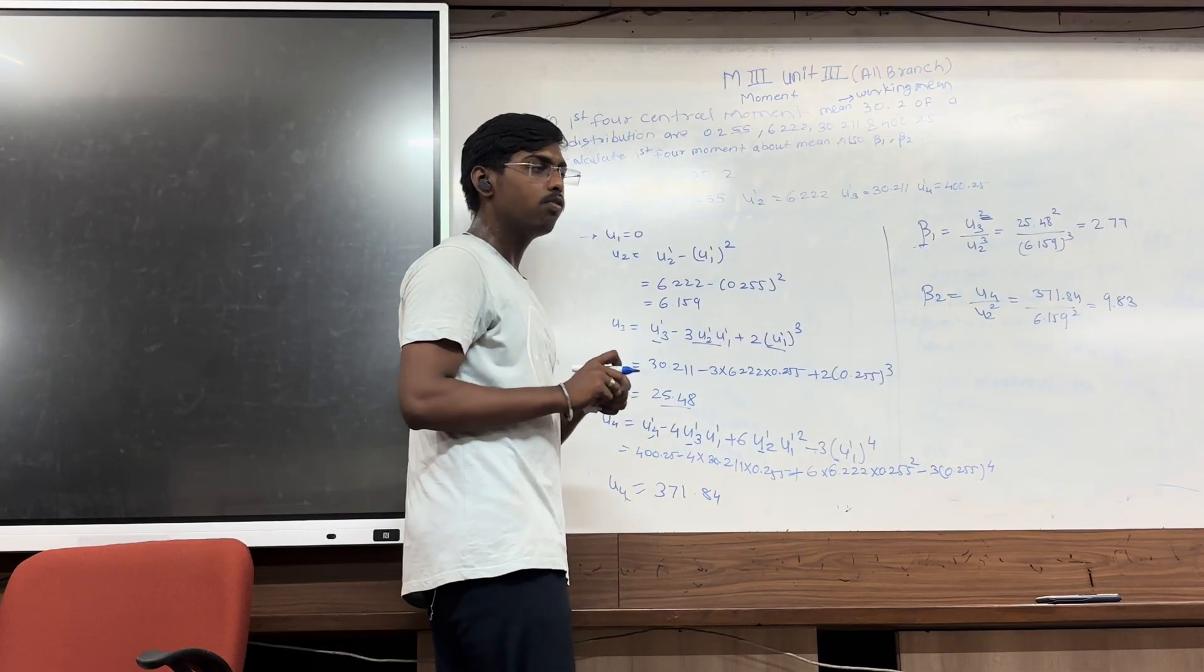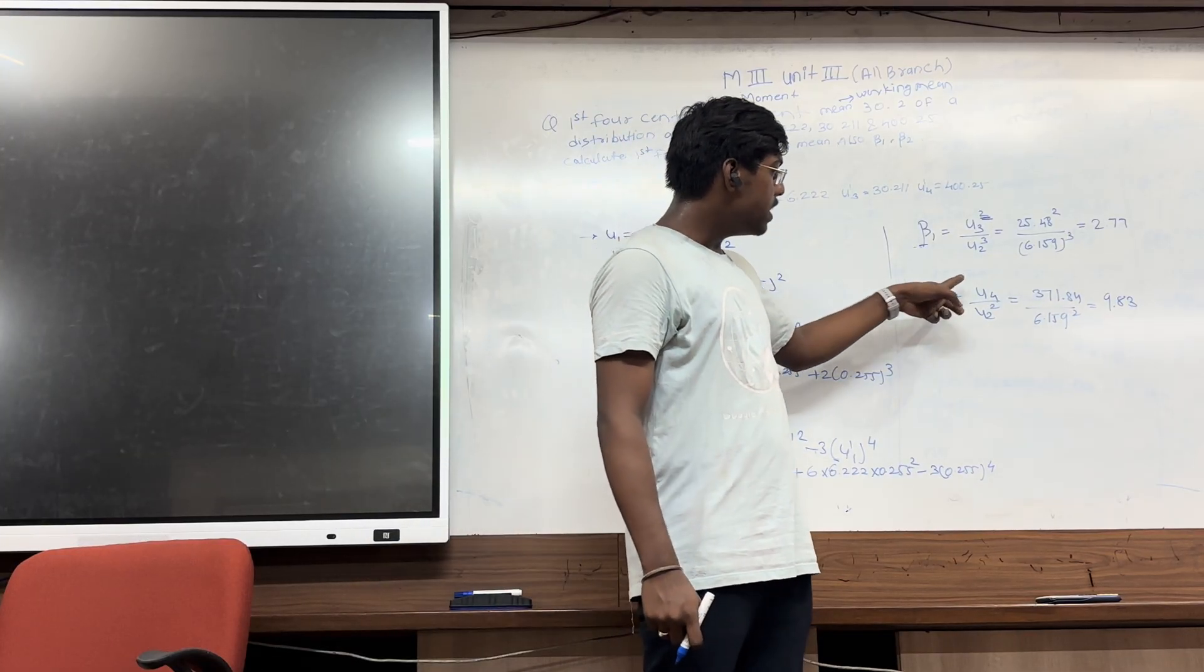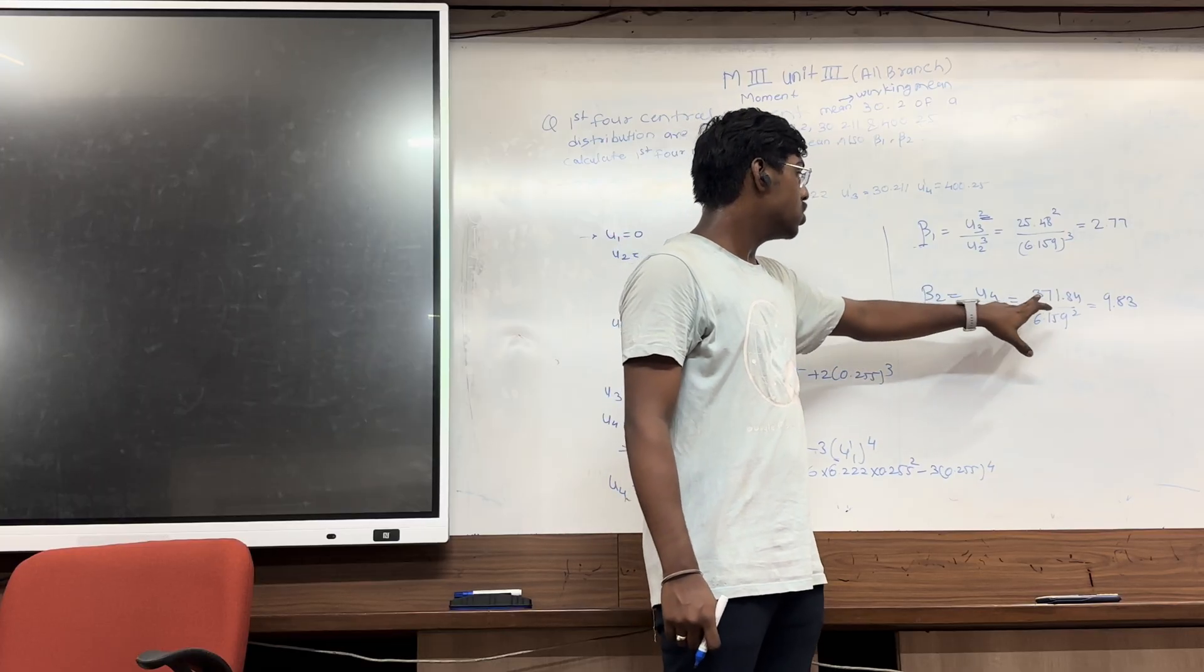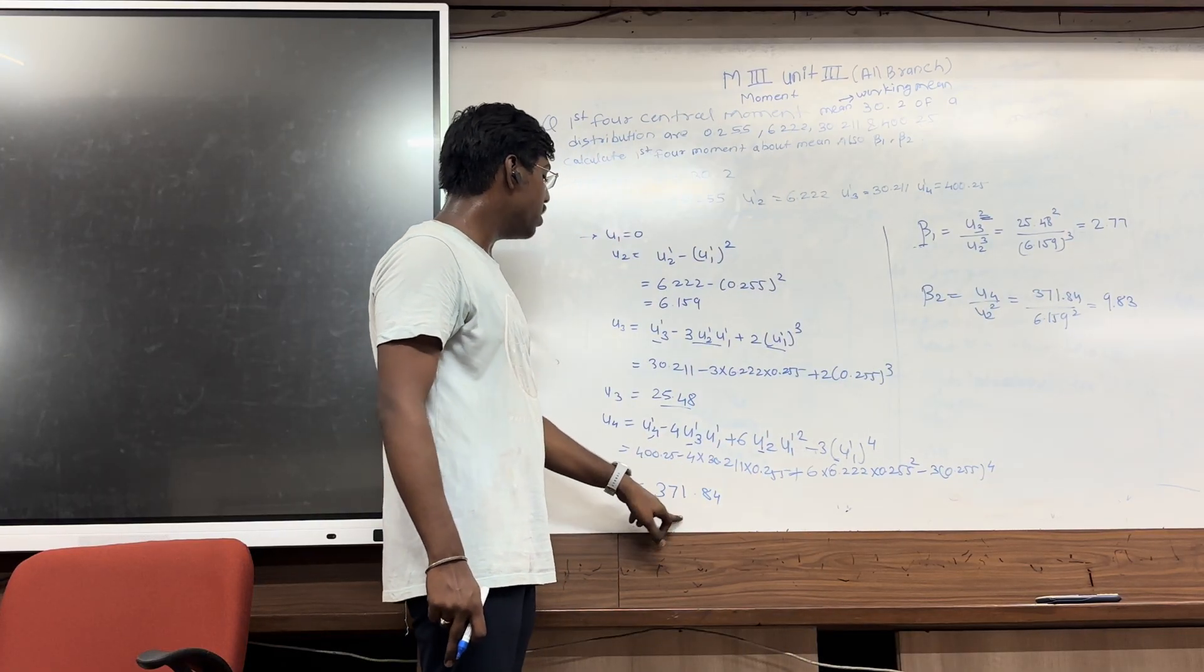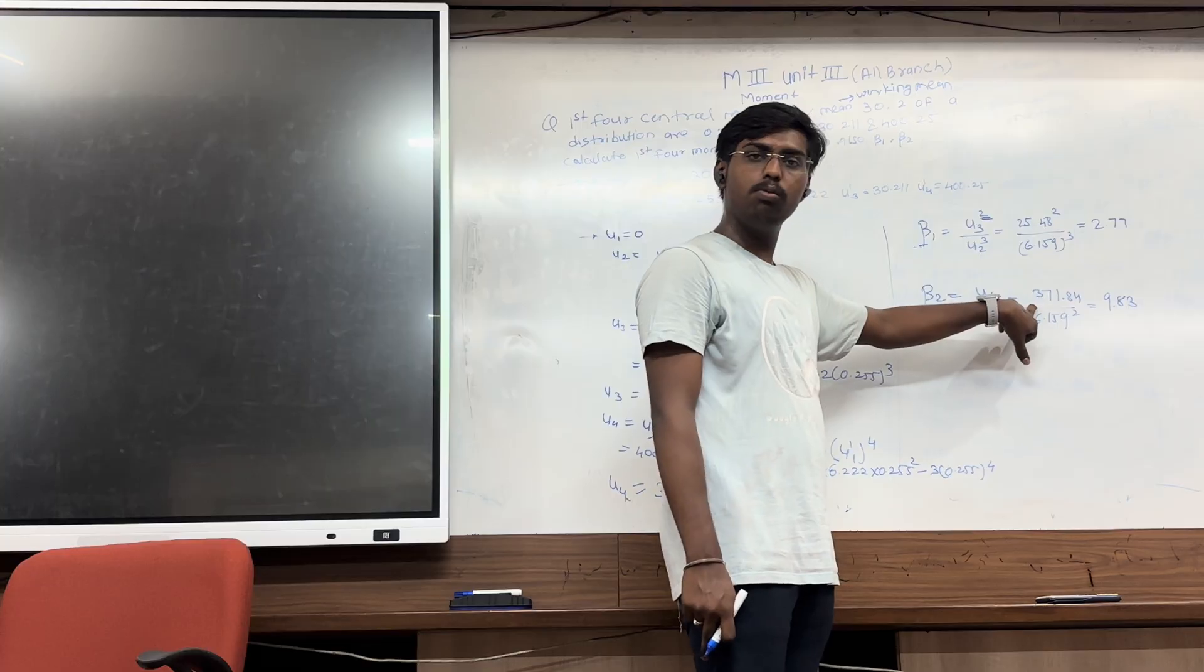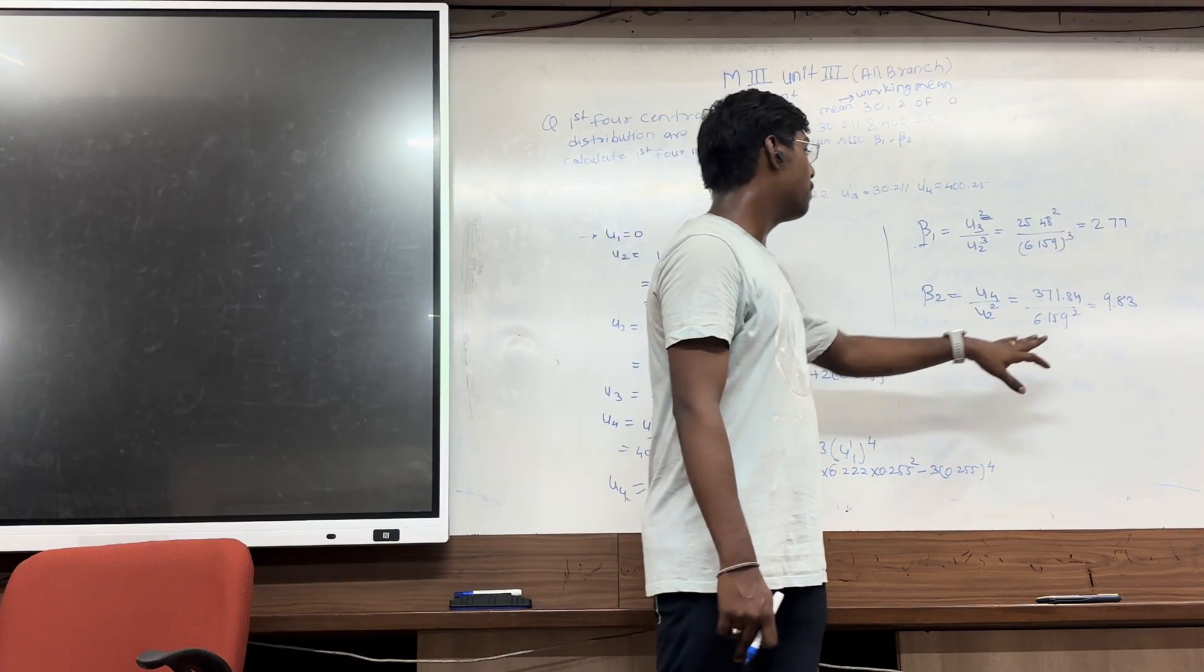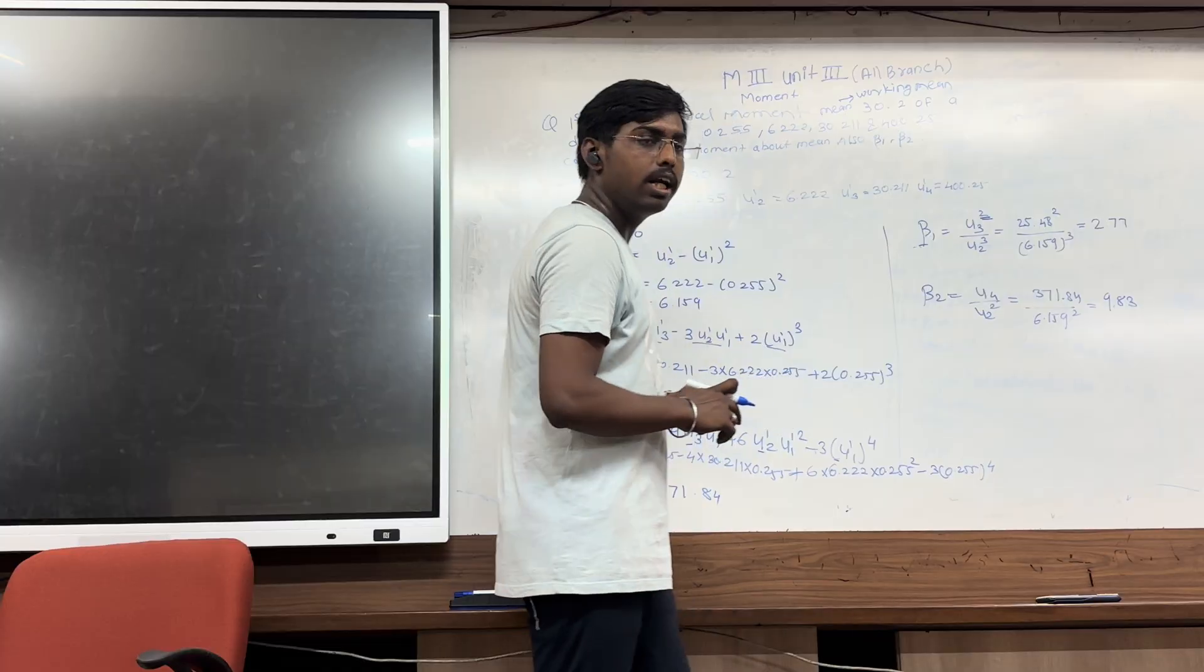And beta2 is mu4 divided by mu2 bracket square. So mu4 is 371.84, so it is 370.84 divided by 6.159 bracket square, and the answer will be 9.8.